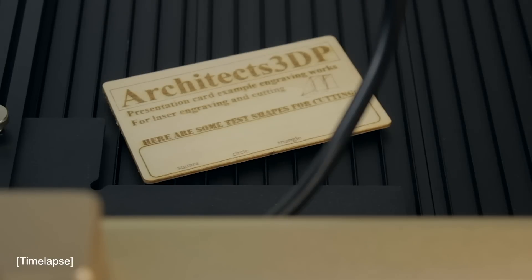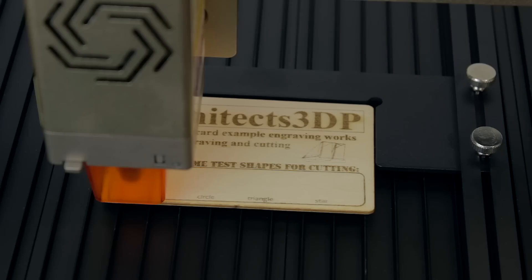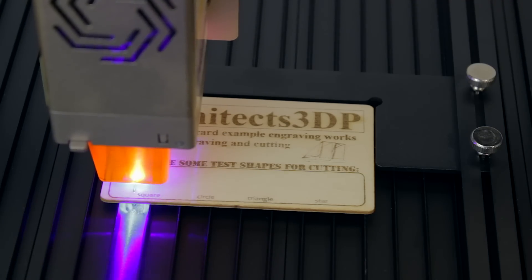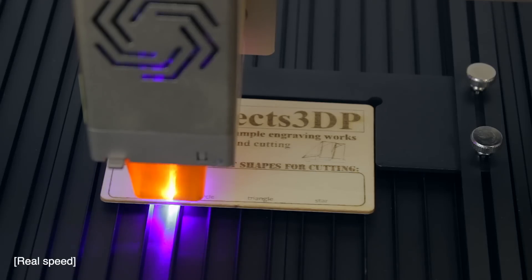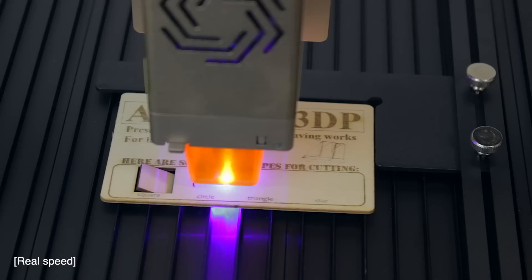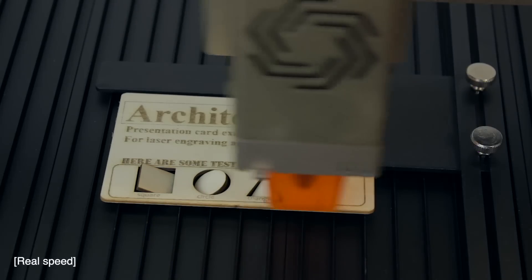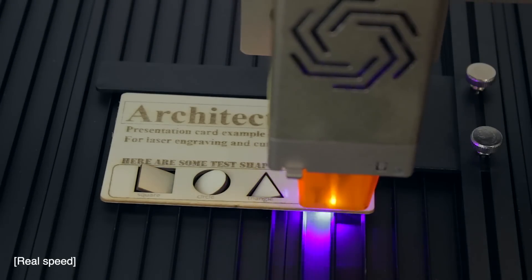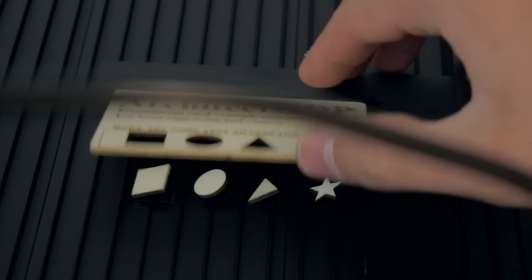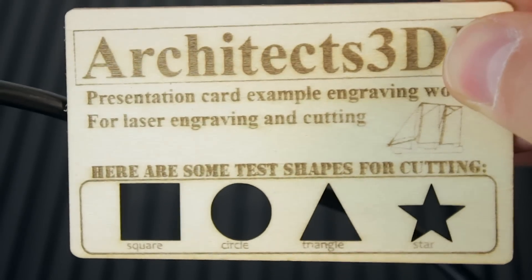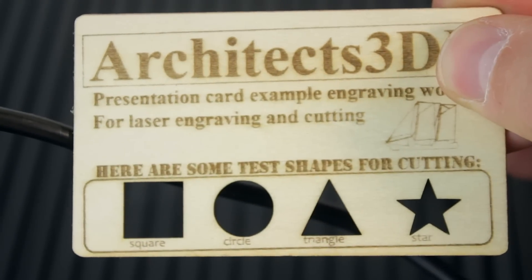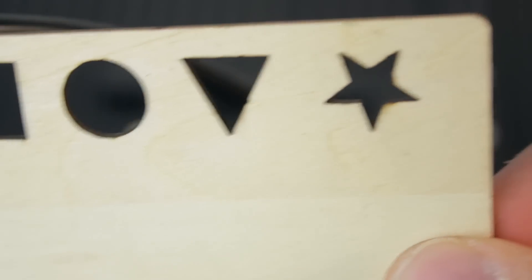After less than four minutes, the engraving work is done. I have centered it again, since now we're going to make the cutting work. This is real speed, guys. Check out this amazing work. As you can appreciate, the quality of the engravings and cuts is very high and precise in this 2mm basswood card that was included with the machine.